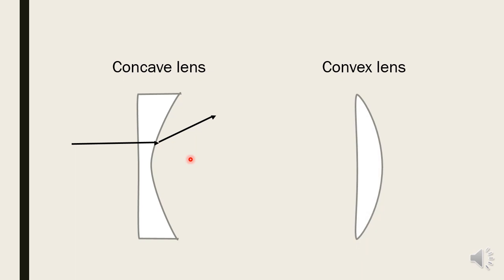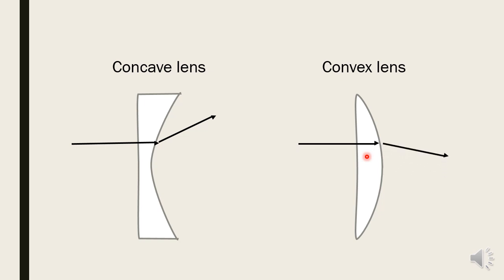A convex lens has one surface which bulges out — a convexity — whereas in concave the surface curves inward. This is essentially a base-to-base prism. When you dissect it you find two prisms arranged base to base, so a ray of light hitting this lens converges towards the center. That is why the other name for convex lenses is converging lenses — the ray bends towards the principal point.